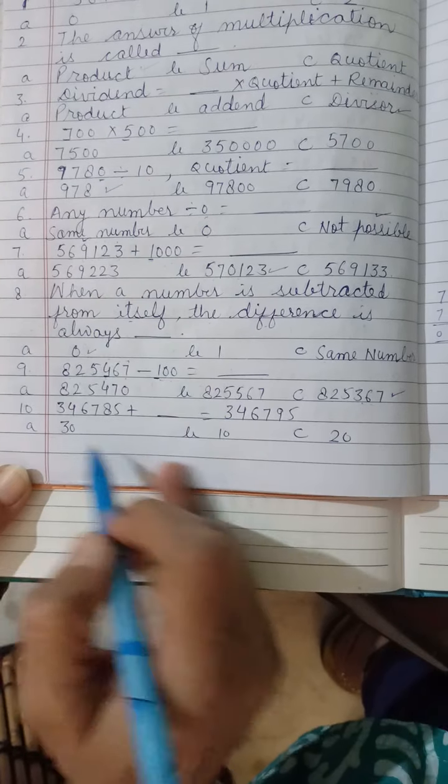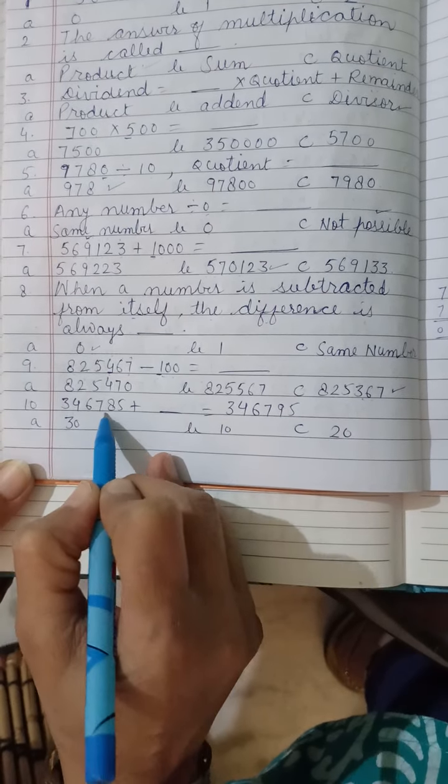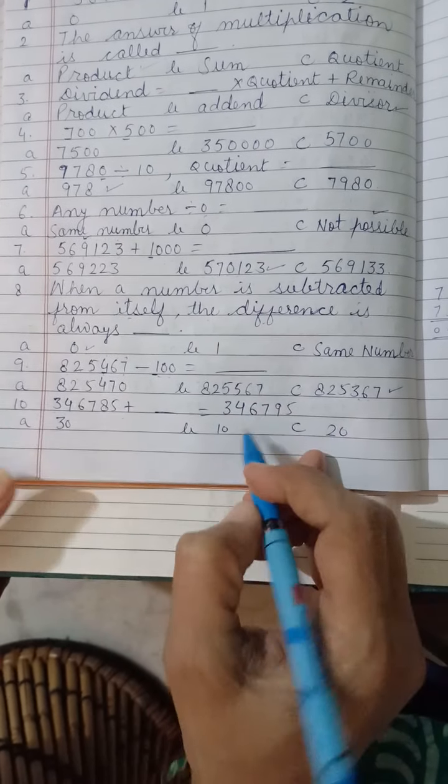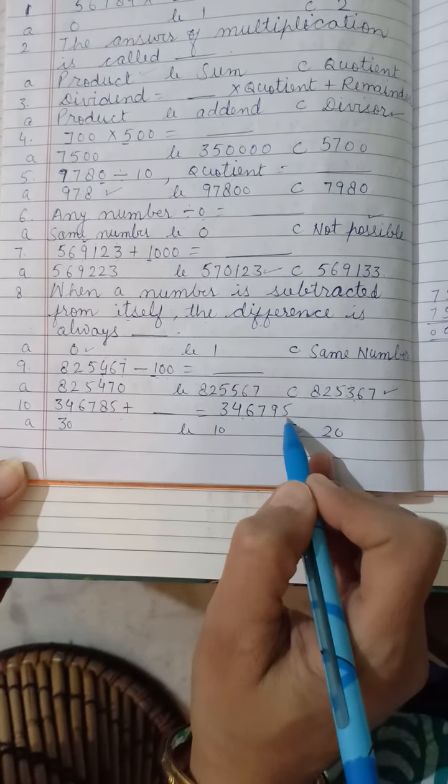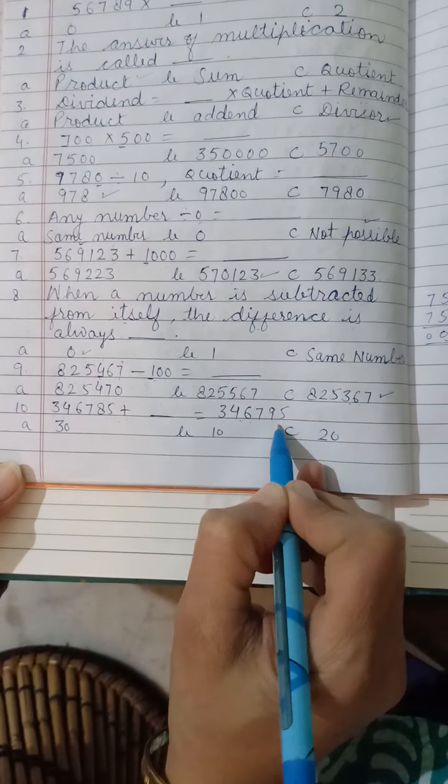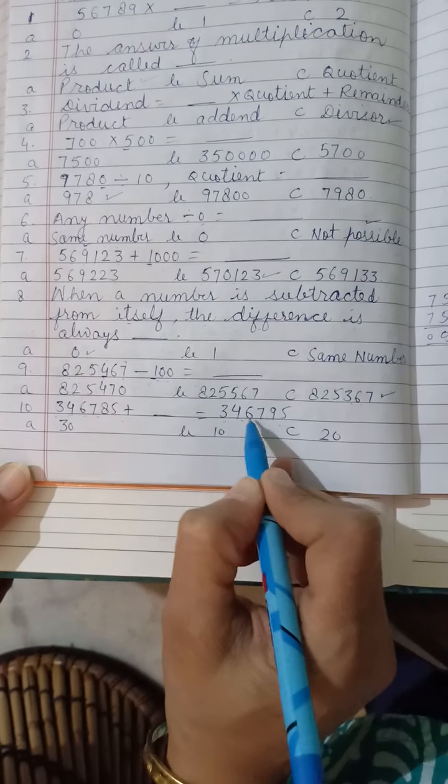Now this one. Now this one you will see. 3, 4, 6, 7. 3, 4, 6, 7.